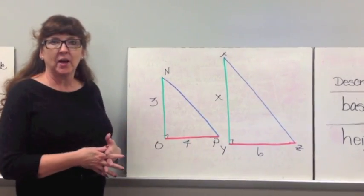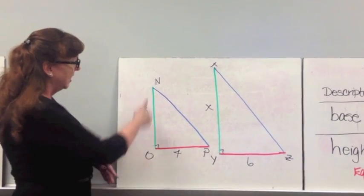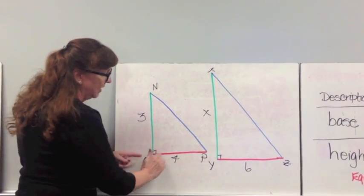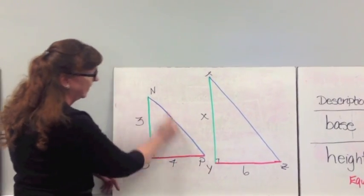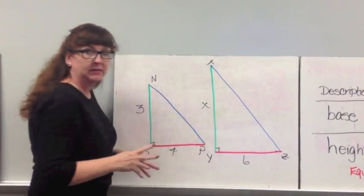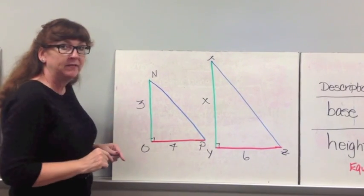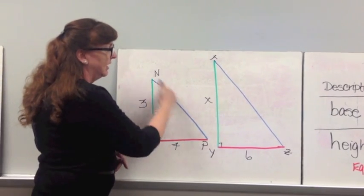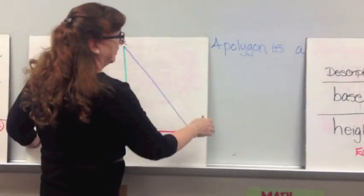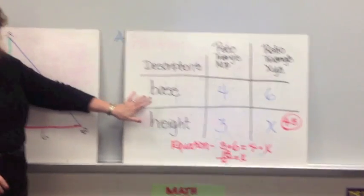Here's our first problem. I've actually color-coded the corresponding sides — these are two triangles. Your corresponding side in green is the height matched with the height. Then you've got your base in red — base matched with base. And then there's the diagonal, which you'll later learn is called the hypotenuse. Those are your corresponding sides.